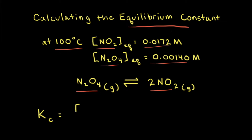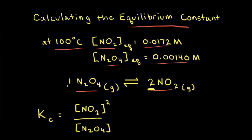So this would be the concentration of NO2. Since there is a coefficient of 2 in front of NO2, this is the concentration of NO2 raised to the second power, divided by the concentration of our reactant N2O4. Since there's an implied one in front of N2O4, this is the concentration of N2O4 raised to the first power.